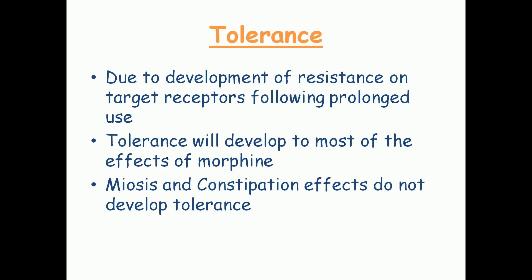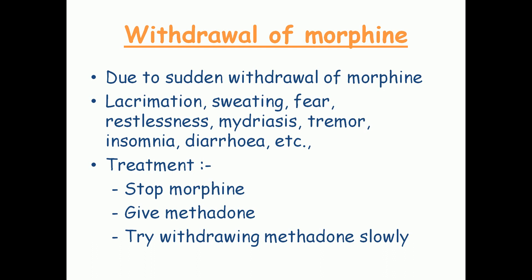Tolerance to morphine develops due to prolonged use. With prolonged use, resistance develops at the target receptors, so euphoric effects and other effects no longer occur. Tolerance develops to most effects of morphine such as analgesia and euphoria, but a few effects such as miosis and constipation do not develop tolerance.